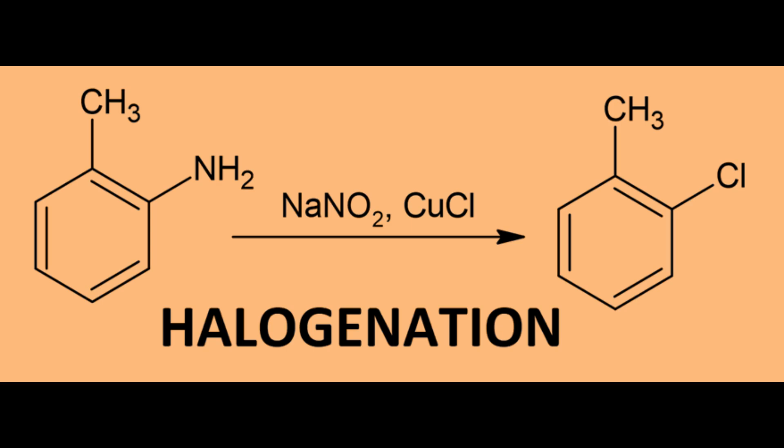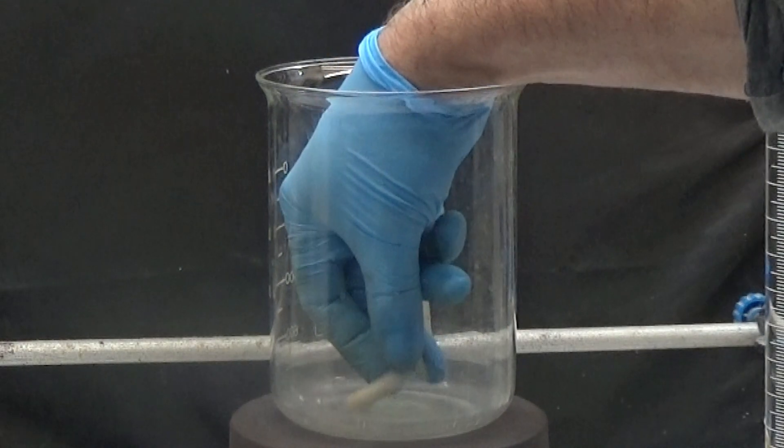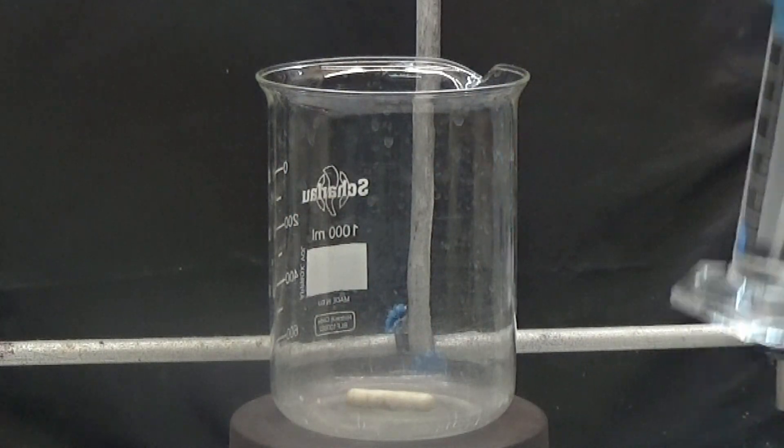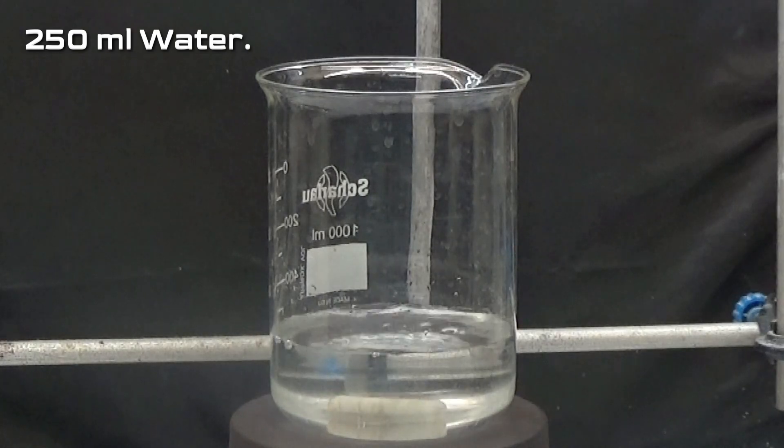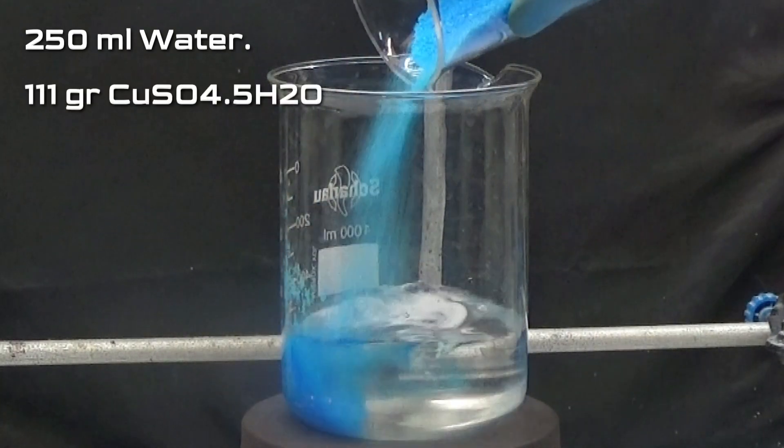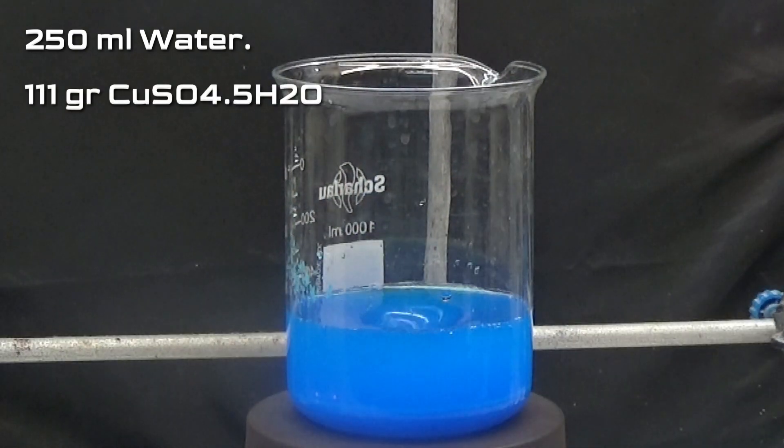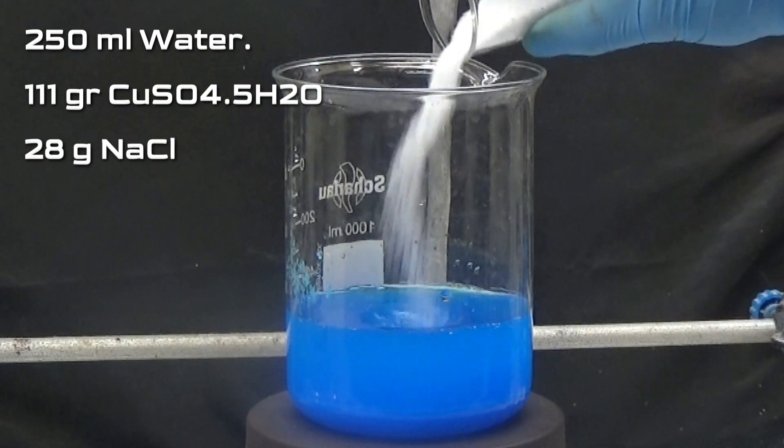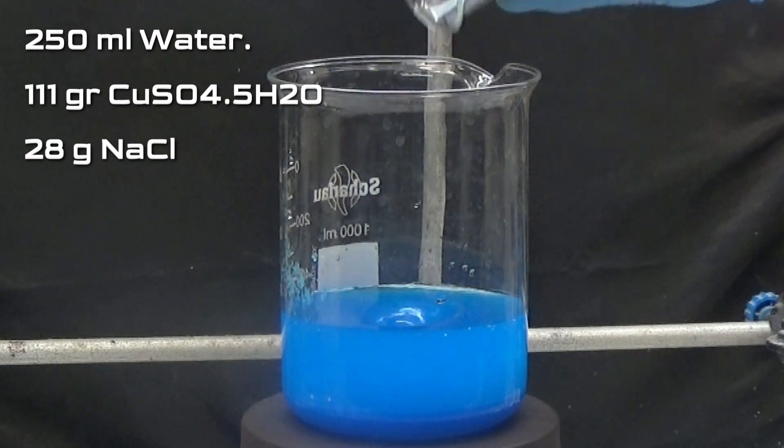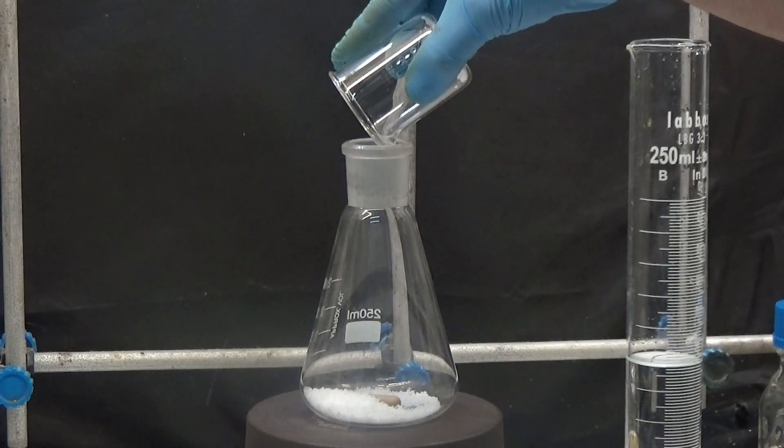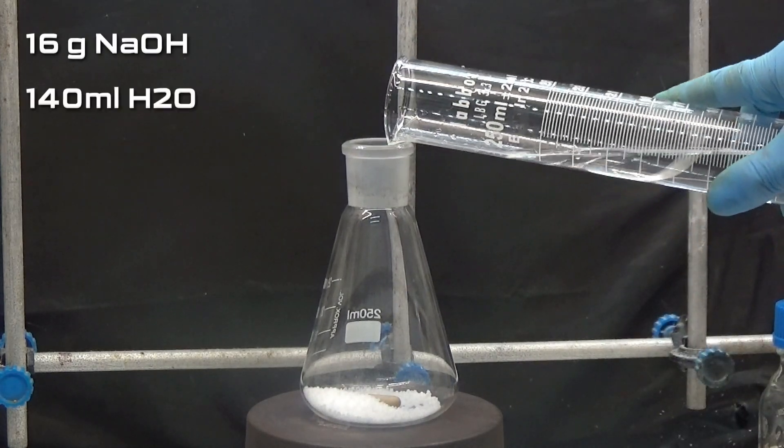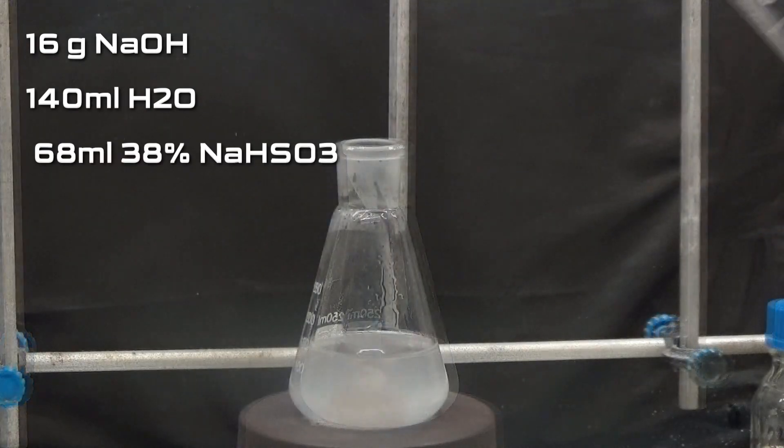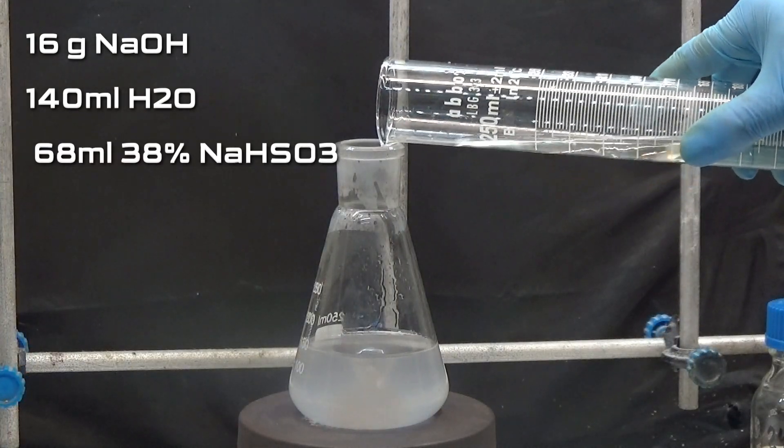The next step is to replace the amine group by a halogen with the Sandmeyer reaction. For the Sandmeyer reaction we will first prepare the copper chloride. In a 1000 milliliters beaker we dilute 111 grams of copper sulfate pentahydrate in 250 milliliters of water. We add 28 grams of sodium chloride. In a 250 milliliters Erlenmeyer flask, we dilute 16 grams of sodium hydroxide in 140 milliliters of water and add 68 milliliters of 38% sodium hydrogen sulfite solution.